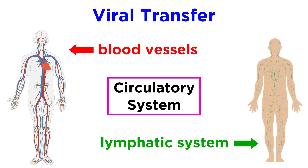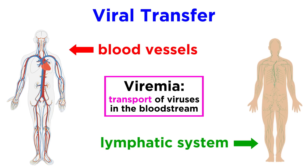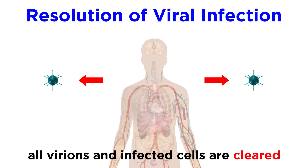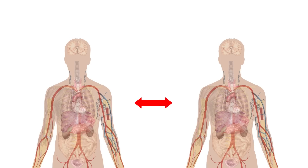The lymphatic system and bloodstream are the primary avenues for viral transfer within the body once an infection is established. The term viremia refers to the transport of viruses in the blood. Viruses can also gain access to the central nervous system or the brain through several routes. Viral infection is considered resolved when all infectious viruses and virus-infected cells are cleared from the body. Now let's move forward and talk about how viruses spread between hosts.